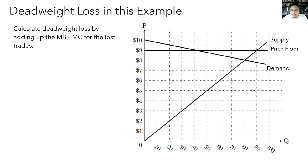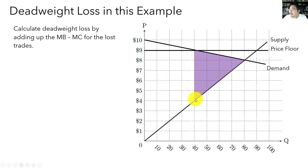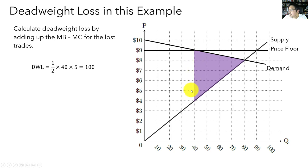Let's do a quick graphical calculation of deadweight loss for this price floor example. Deadweight loss is the area of the triangle representing the lost trades. The base runs from 40 to 80, so it's 40; the height runs from 4 to 9, so it's 5. DWL = ½ × 40 × 5 = $100, the same answer as before.